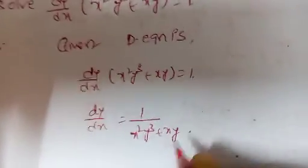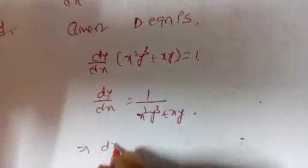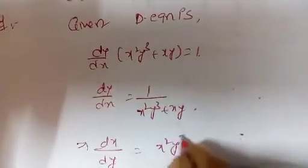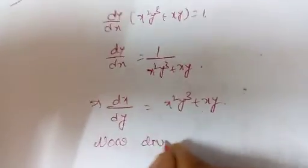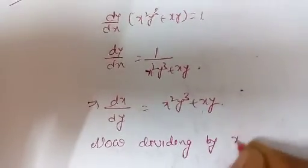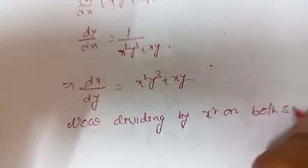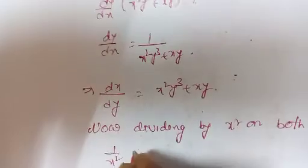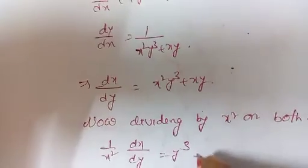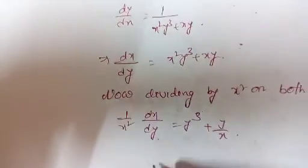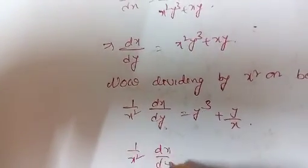Now dy/dx = 1 / (x²y³ + xy). Dividing through and rearranging: (1/x²) · dx/dy − y/x, expressing the equation in terms of dx/dy.